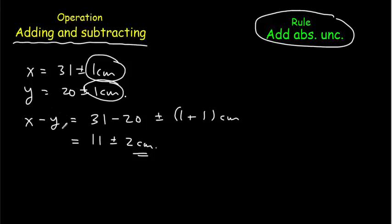Notice here, when you're subtracting quantities, the uncertainty can become quite large compared to the value. For instance, what if this value had been 21? Then we would have got 1 plus or minus 2 centimeters. So if you're subtracting quantities, your uncertainty can become quite large.